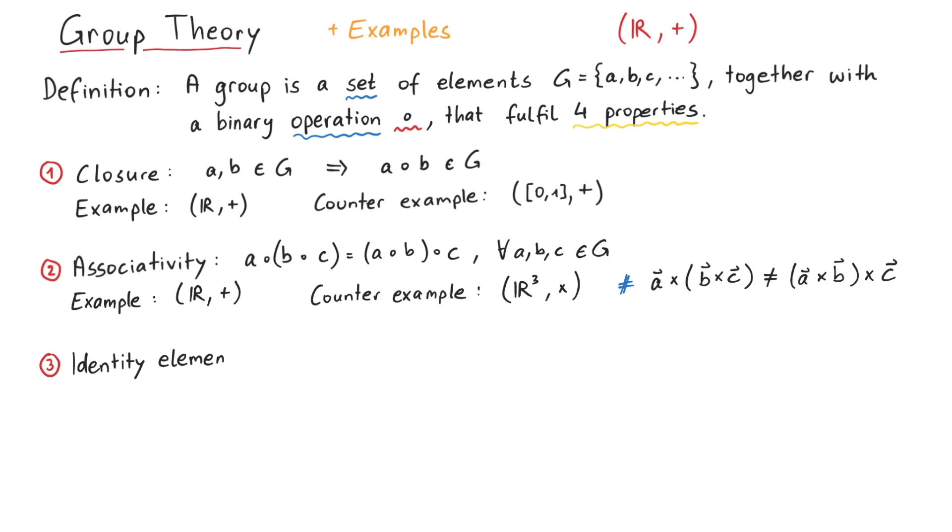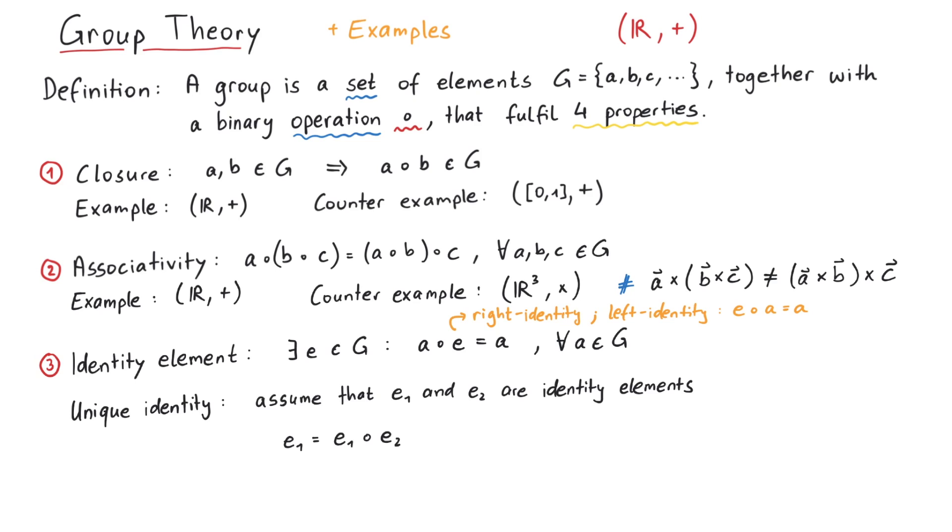Third, the identity element. There exists an element e in G, so that a circle e is equal to a, for all a in G. Strictly speaking, this is a right identity, but in physics we usually don't have to worry about right and left identities. What is important though, is that the identity element is unique. To prove this, let's assume that e1 and e2 are both identity elements. Then e1 is equal to e1 circle e2, since e2 is an identity. But since e1 is also an identity, this is equal to e2, and we see that e1 must be the same as e2.